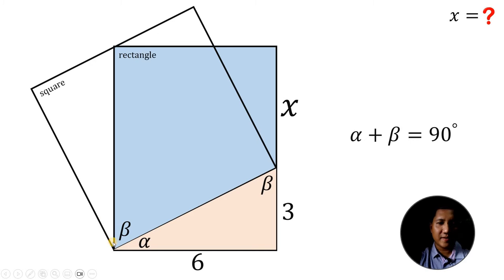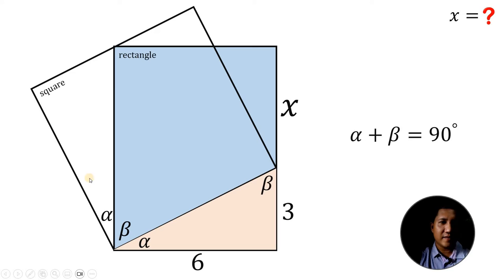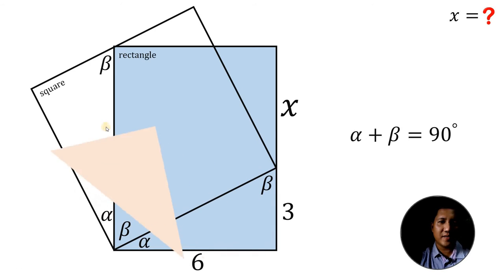Also, let's look at this corner — the corner of this square. Again, this is 90 degrees, and if one angle is beta, the other angle is alpha. Now consider this right triangle on the side: this is 90 degrees, this is alpha, so this angle must be equal to beta. So this right triangle on the bottom is similar to this right triangle on the side.